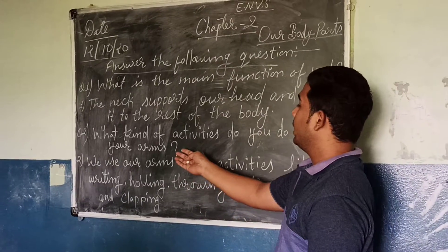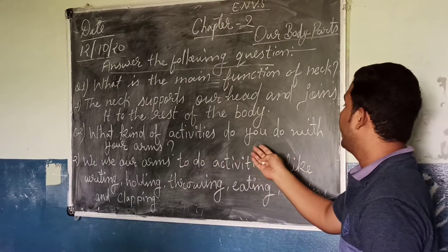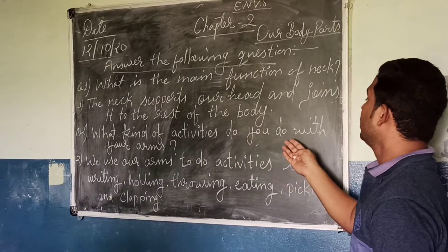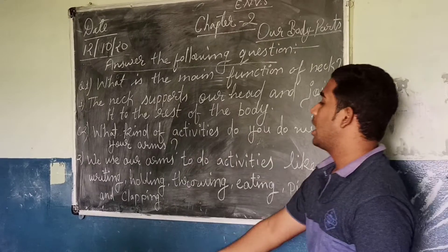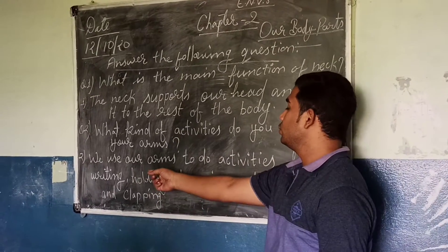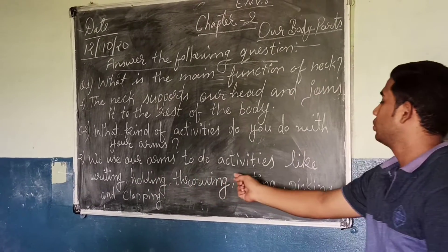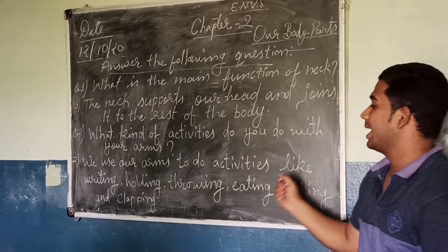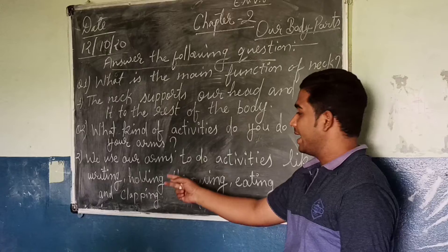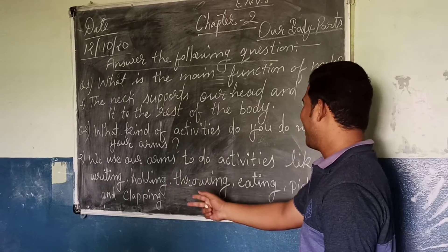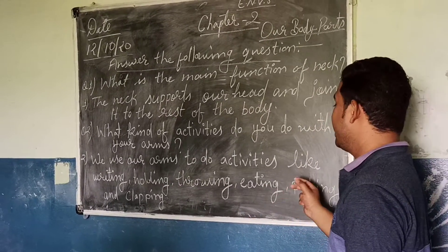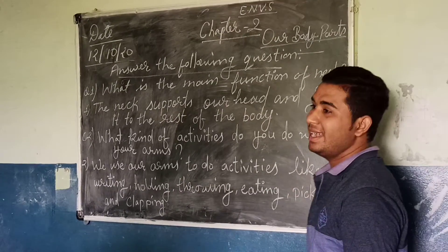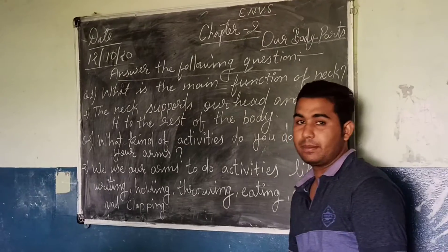Second question: what kind of activity do you do with your arm? We use our arms to do activities like writing, holding, drawing, eating, picking, and clapping.